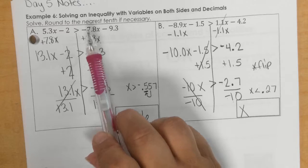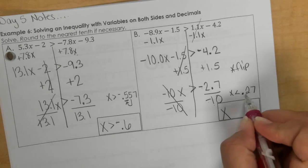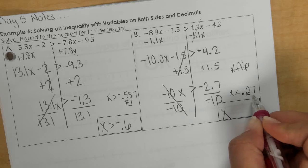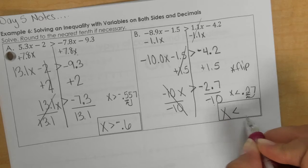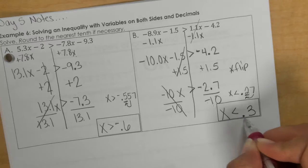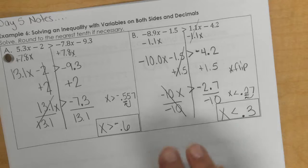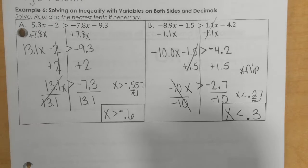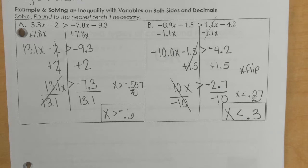But it says up there, the directions say rounded to the nearest tenth. So, this 2 is your tenth. The 7 makes the 2 go up. So I would have x less than 0.3 rounded. So that is it for day 5 notes. We are done and ready for the next item on the agenda.